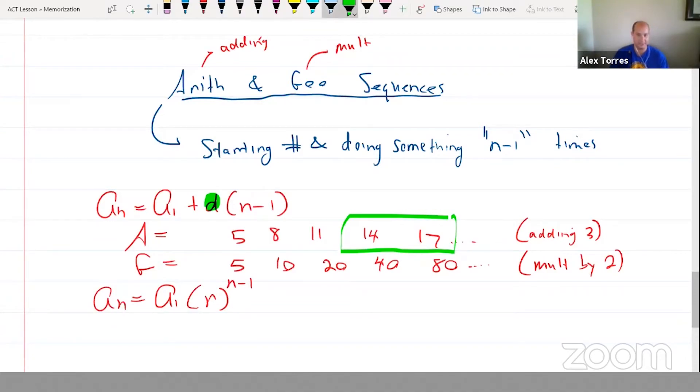Similarly, when you're multiplying, the thing that you're multiplying is called the common ratio. Because if I wanted to know what we were multiplying by, I would take the 80 and 40 and divide them, and division is kind of like a ratio. So the common ratio is the thing that you're multiplying by, and you need to know both of these formulas in order to handle lots of questions.